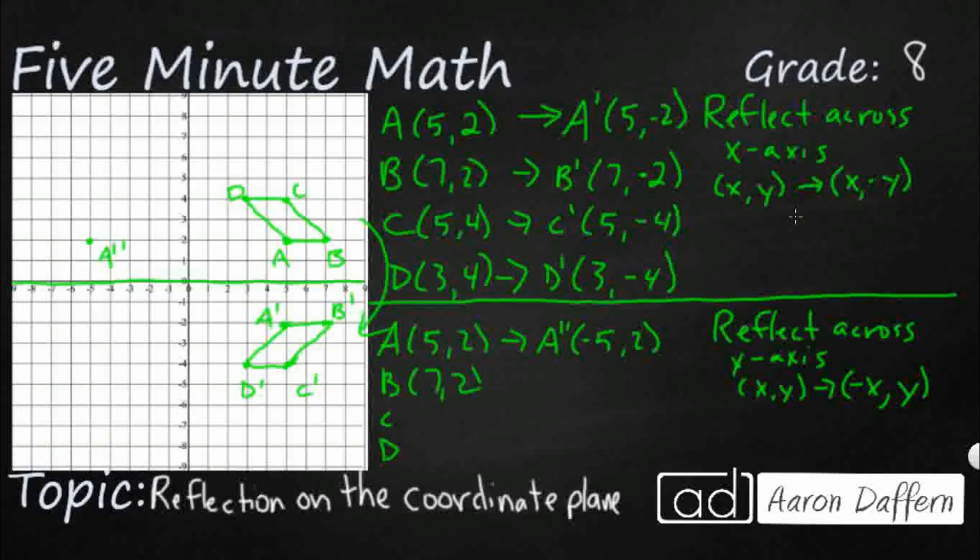So that is going to be A double prime. So now I've got 7,2. It's going to go to B double prime. And it's negative 7, 2. So it's going to extend it back this way a little bit. This is B double prime.